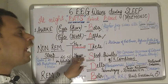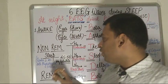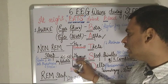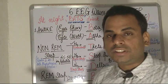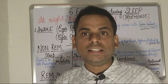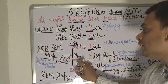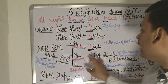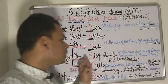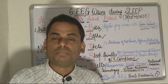Moving on to the N2 stage, which is the light sleep stage. In adults, 45 to 50 percent of sleep is in the N2 stage. The characteristic EEG waves seen during N2 are sleep spindles and K complexes. Features of N2 include no conscious awareness of the external environment and decreased muscular activity.